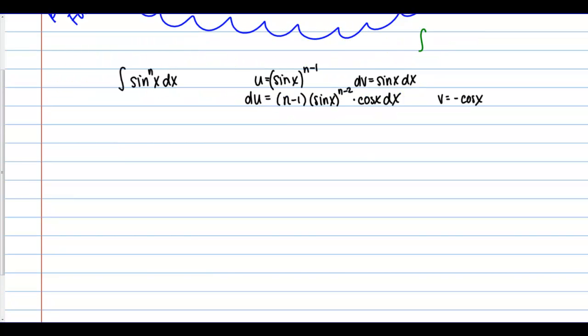We know that integration by parts tells us that the integral of u dv equals uv minus the integral of v du. Let's go ahead and apply that using the parts we just came up with to the integral of sine to the n power of x dx. uv is going to give us negative cosine x times sine of x to the n minus 1 power.